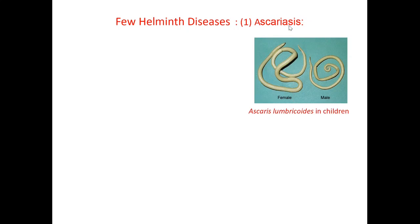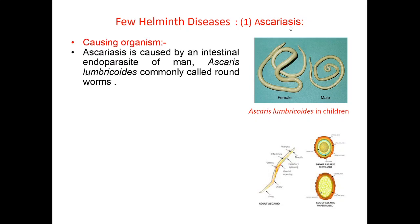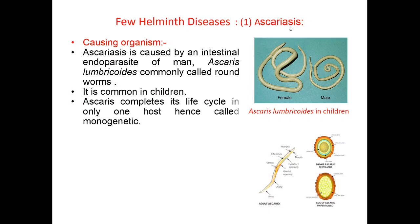Let us study a few Helminth diseases. The first one is Ascariasis. Ascariasis is caused by an intestinal endoparasite of man, Ascaris lumbricoides, commonly called Roundworm. It is common in children. Ascaris completes its life cycle in only one host, hence called Monogenetic.